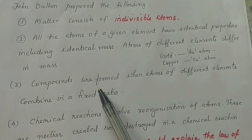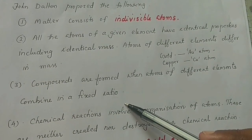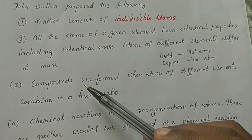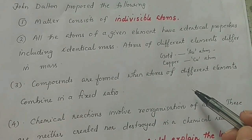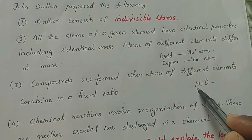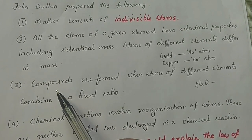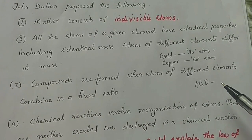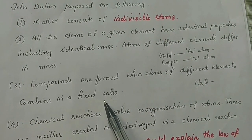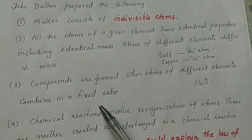The third point: compounds are formed when atoms of different elements combine in a fixed ratio. In the first chapter, we read the laws of chemical combination. For example, hydrogen and oxygen combine in a fixed ratio to form a compound.